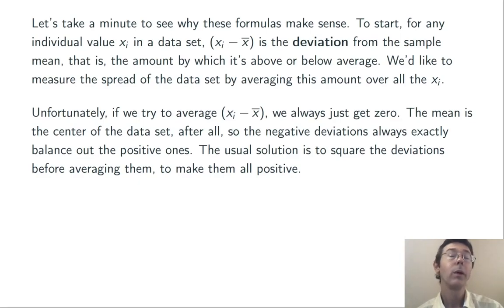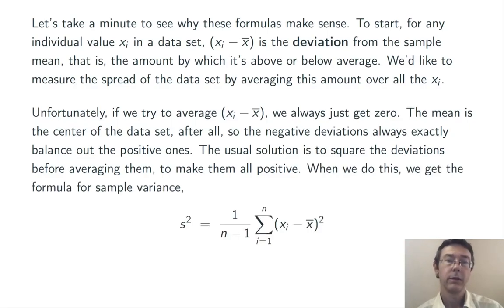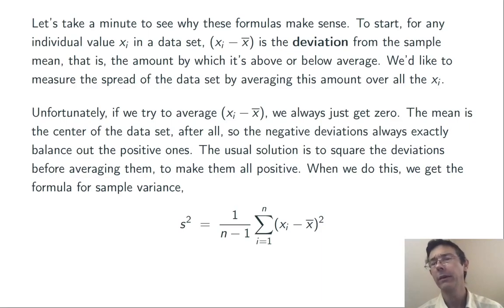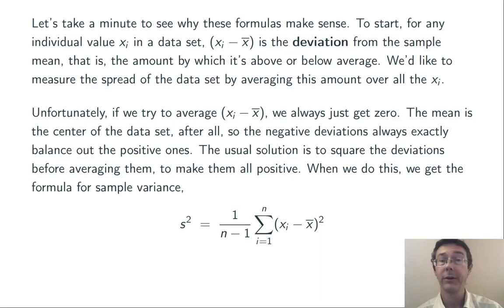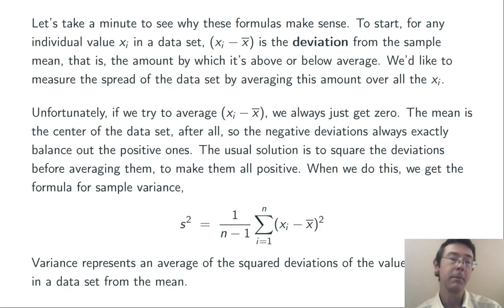So the way we're going to get around that — the way we're going to count all of our deviations as positive — is to square all of these xi minus x-bar values before we take an average. This gives us our formula for sample variance: we take xi minus x-bar and square it for each xi in the data set, then take the average of all of those. Variance represents, in a sense, an average of the squared deviations of all values in a data set from the mean.